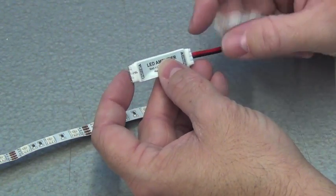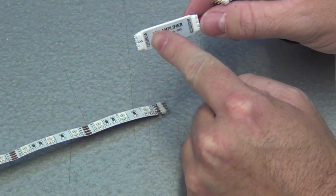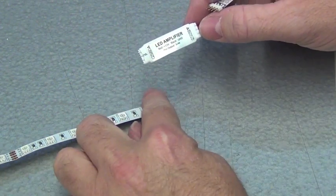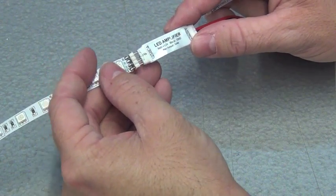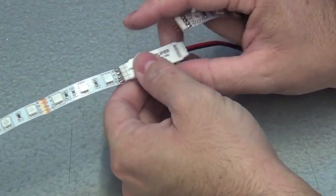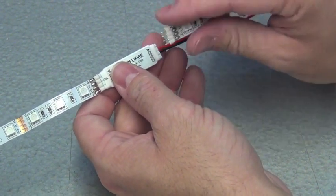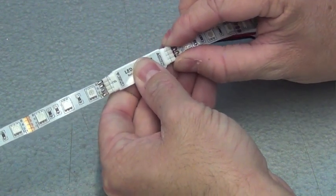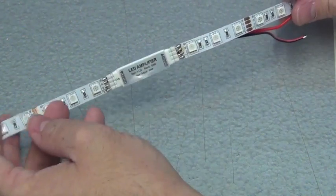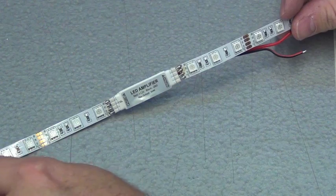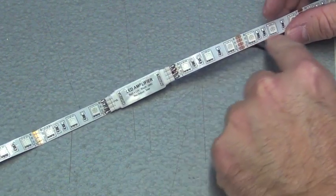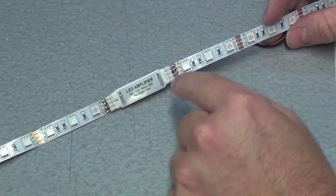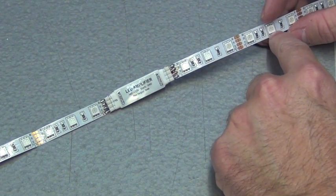Once that connection's made, all you have to do is make sure that you look here, clearly it's marked input. So input would be the input from your RGB controller side where the lights are coming from. And output would be the lights going out to the end of your run. And once you plug that in, now you're set. And this amplifier will then carry the signal every 16 feet and amplify it so that you don't lose signal, and then your lights end up doing something different down the run.